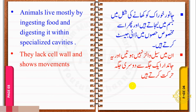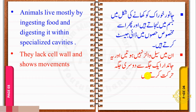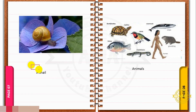Aapne kingdom Plantae me pada tha ke un ke cell me cell wall hoti hai. Fungi ki cell wall chitin ki bani hoti hai jabke plants ki cell wall cellulose ki bani hoti hai. Fungi aur kingdom Plantae ke members ek jaga se doosari jaga move nahi kertate, jabke kingdom Animalia ke jandaron ke cells mein cell wall nahi paai jati aur yeh ek jaga se doosari jaga harakat kertate hain, jaise hum insaan ek jaga se doosari jaga harakat kertate hain.